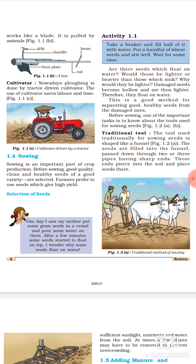Selection of seeds - Activity 1.1. Take a beaker and fill half of it with water. Put a handful of wheat seeds and stir well. Ek muthi wheat seeds, humko usmein daal lein, aur usko achhe se mix karna hai. Wait for some time. Kuch time ke liye aapko rukna hai. Are there seeds which float on water? Aur aapko yeh dekhna hai ki kya kuch seeds upar paani mein tair rahe hai? Would those be lighter or heavier than those which sink? Toh jo aapko paani mein upar tairate hue dikhen, aapko yeh batana hai ki woh zyada bhari hai ya halke hai, un seeds ke comparison mein jo ki water ke niche baithe hai.